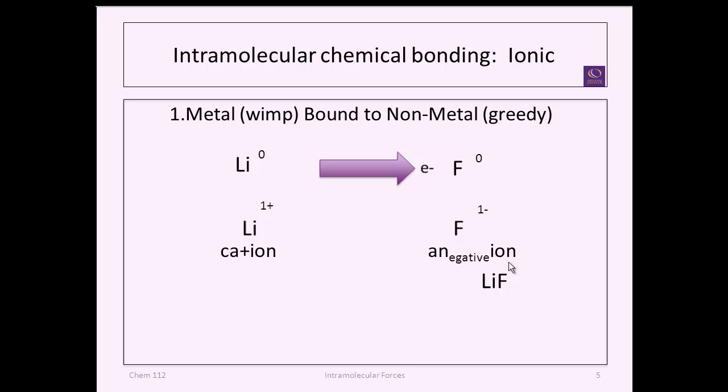Sometimes we refer to the plus ions as cations, and that T in there you can think of it like a plus sign to remind you. Then the N in the anion is to remind you that it's negative. So nonmetals tend to become anions, metals tend to become cations.